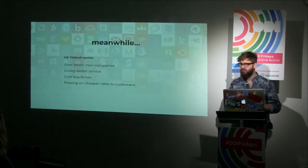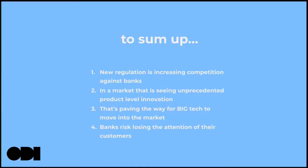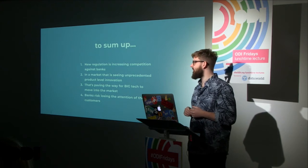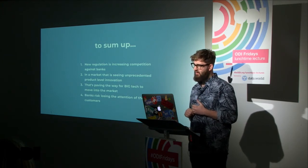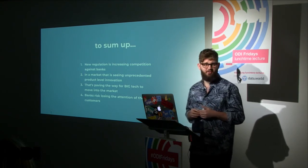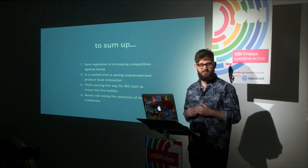Meanwhile, fintechs are built from the ground up using cloud providers, relatively cheap to operate, passing those cost savings onto customers. That distribution cost of 45% starts to become a real big hindrance. So these are the kinds of things that open banking is starting to shed more light on — how does a large bank adapt to this market while the fintech sector is growing, with over 1,600 new companies providing better service, costing much less to run, and offering better rates.